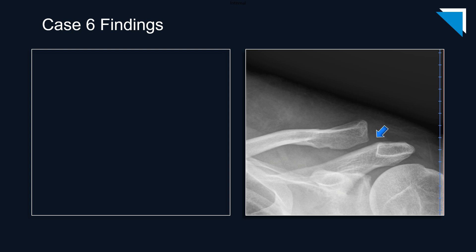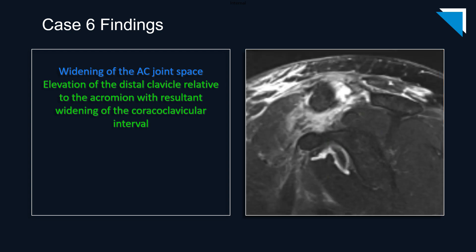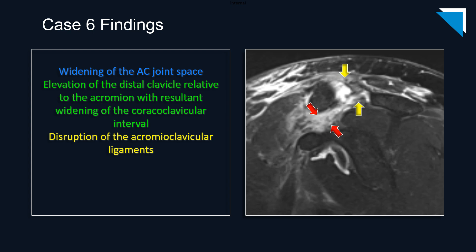There is mild widening of the acromioclavicular articulation, with elevation of the distal clavicle relative to the acromion and resultant widening of the coracoclavicular interval. The sagittal fluid-sensitive images from the MRI are excellent for evaluating the supporting ligaments of the shoulder. Here we can see the widening of the acromioclavicular joint space is due to underlying rupture of the acromioclavicular ligaments. Similarly, the widening of the coracoclavicular interval is due to rupture of the underlying coracoclavicular ligament.